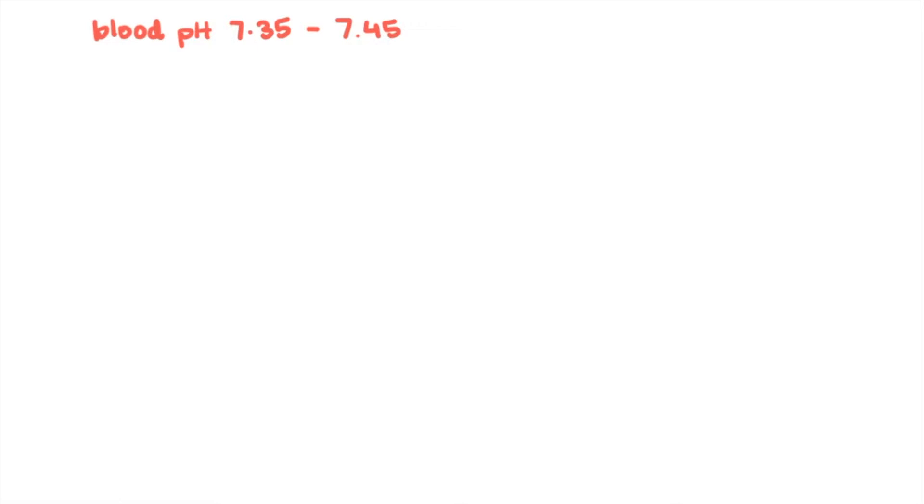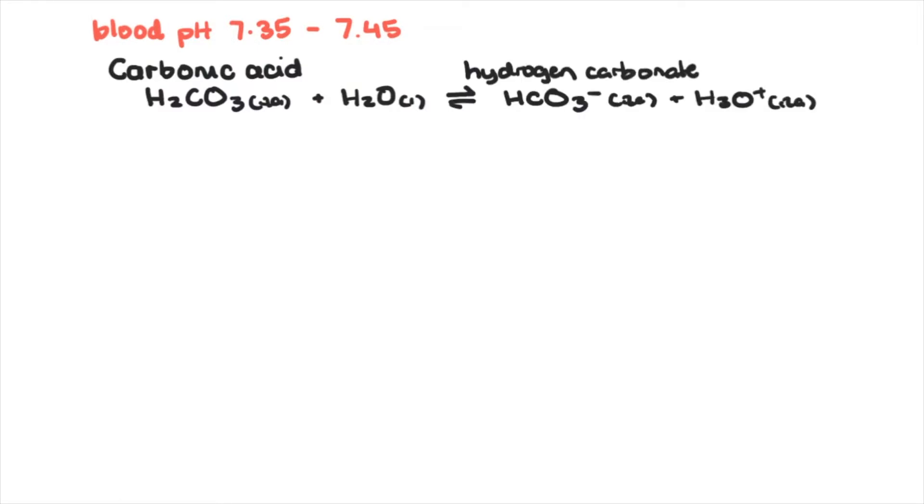The system consists of carbonic acid and its conjugate base, hydrogen carbonate. If there's an increase in hydronium ions, the buffer shifts left to counteract the change, so pH remains stable. If blood becomes slightly basic, the buffer shifts to the right to produce more hydronium. Changes in blood pH are therefore negligible due to the shifts in the equilibrium.